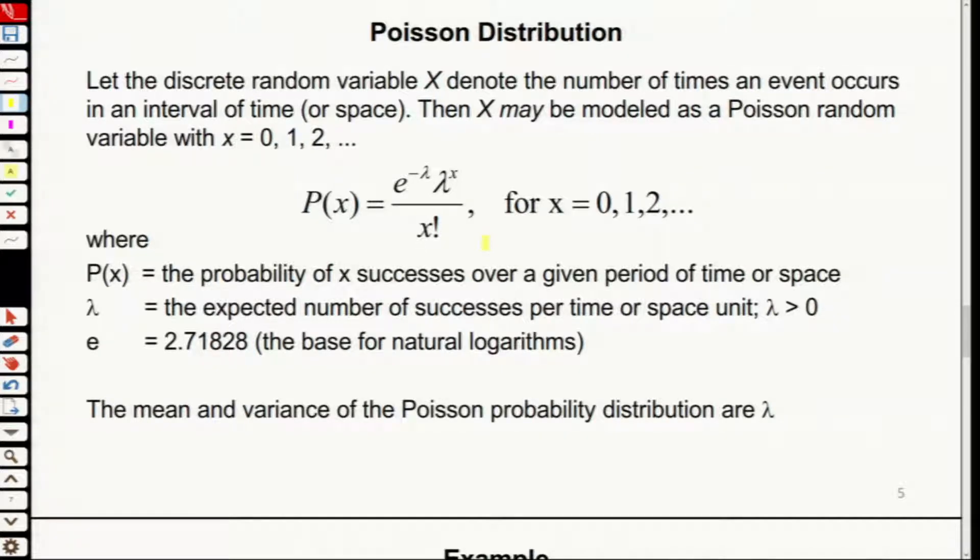The probability that X successes over a given period of time. Lambda is the expected number of successes per time or space unit. E is the natural number 2.71828. The mean and variance of the Poisson distribution are lambda. This is the definition.